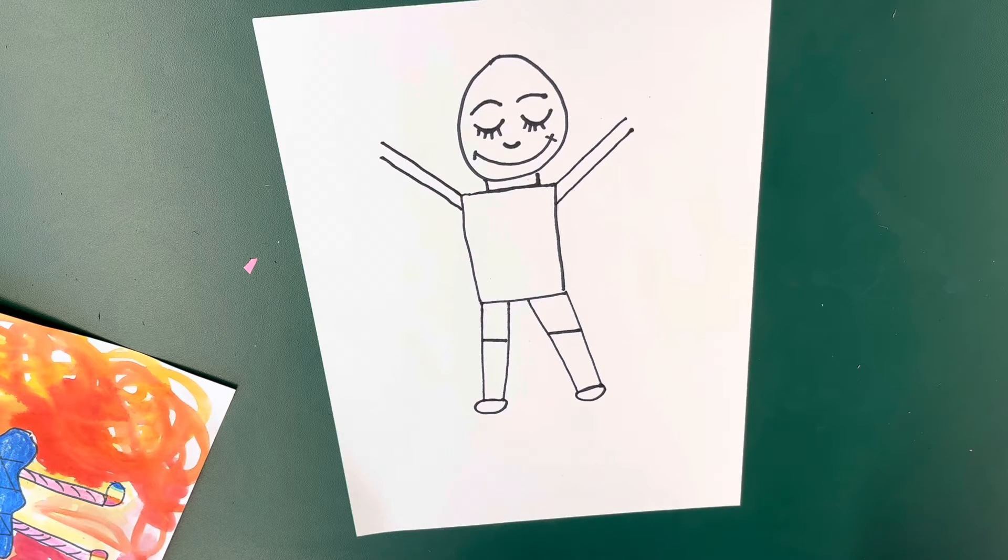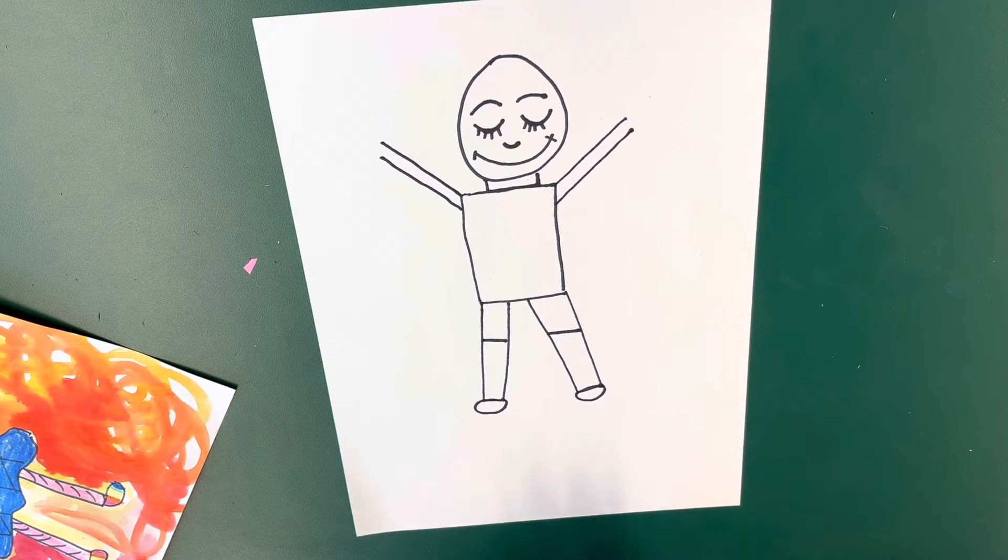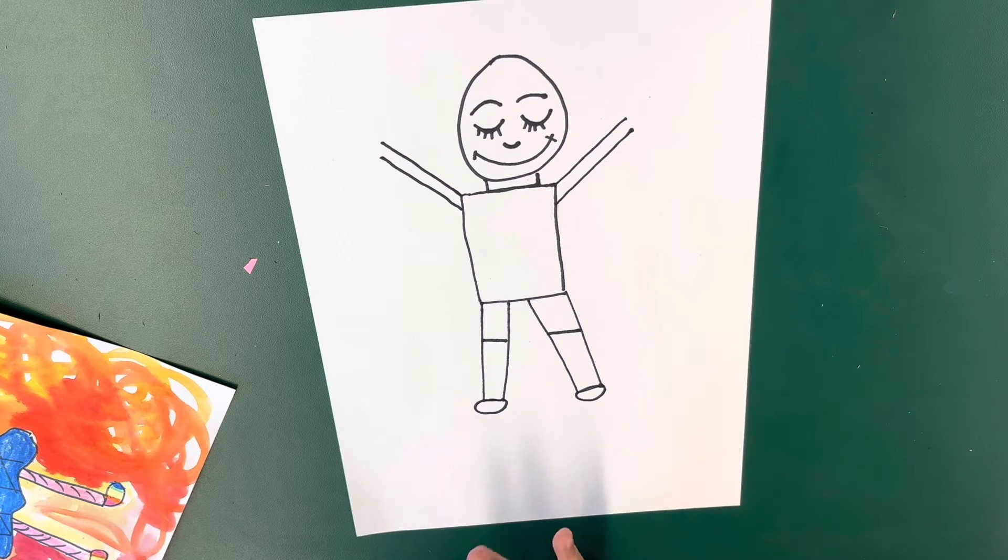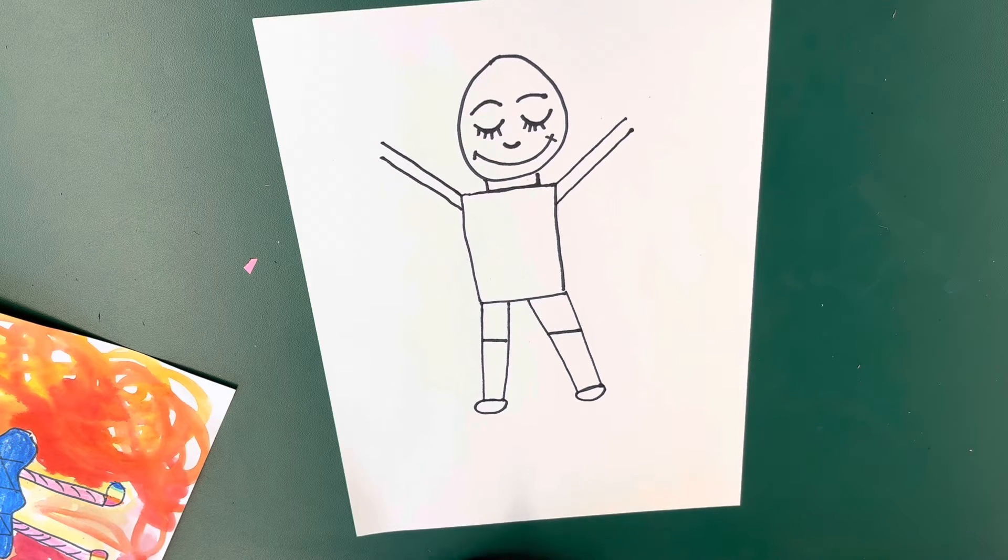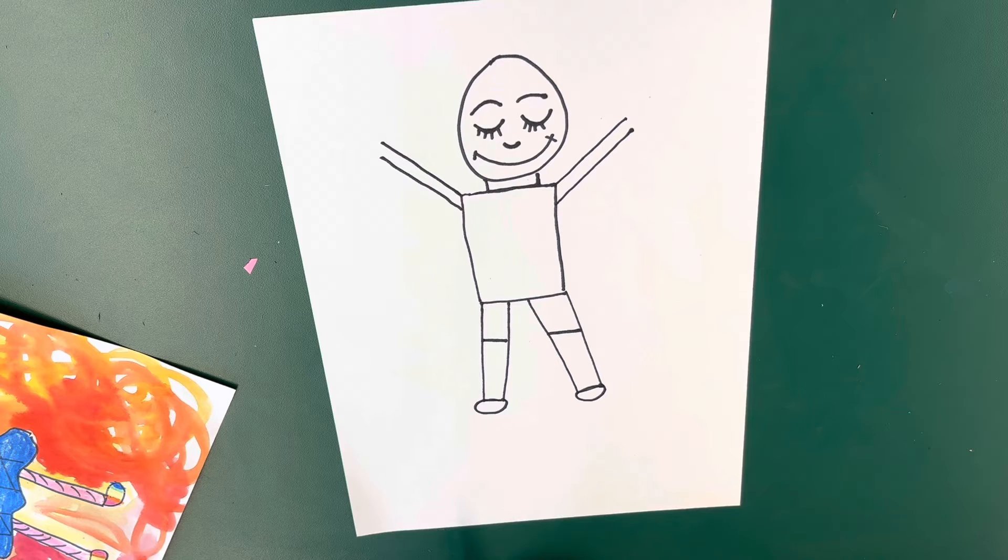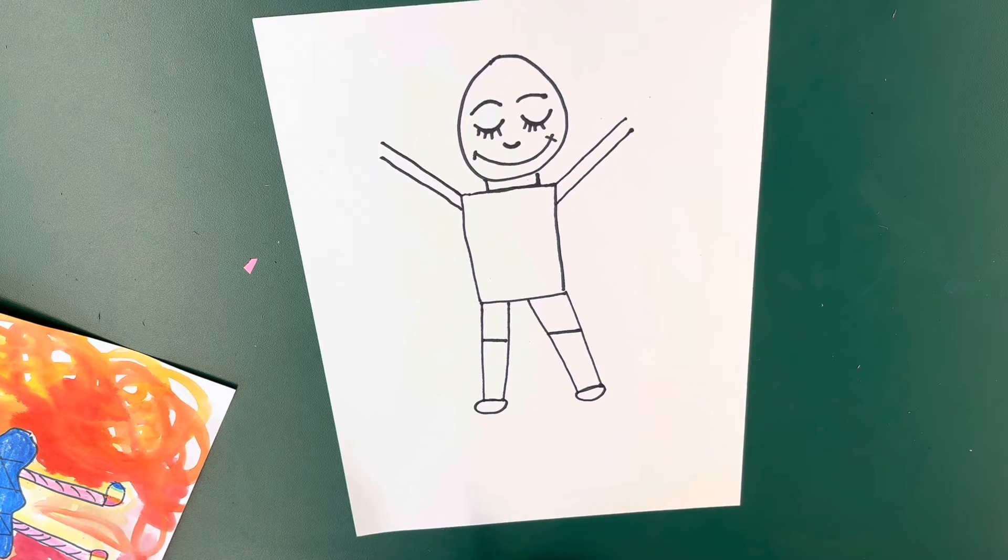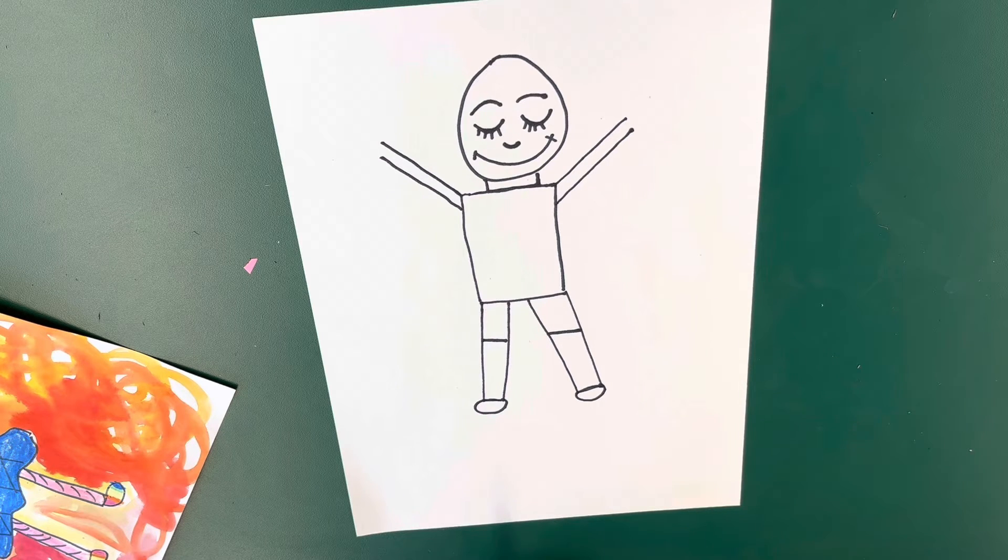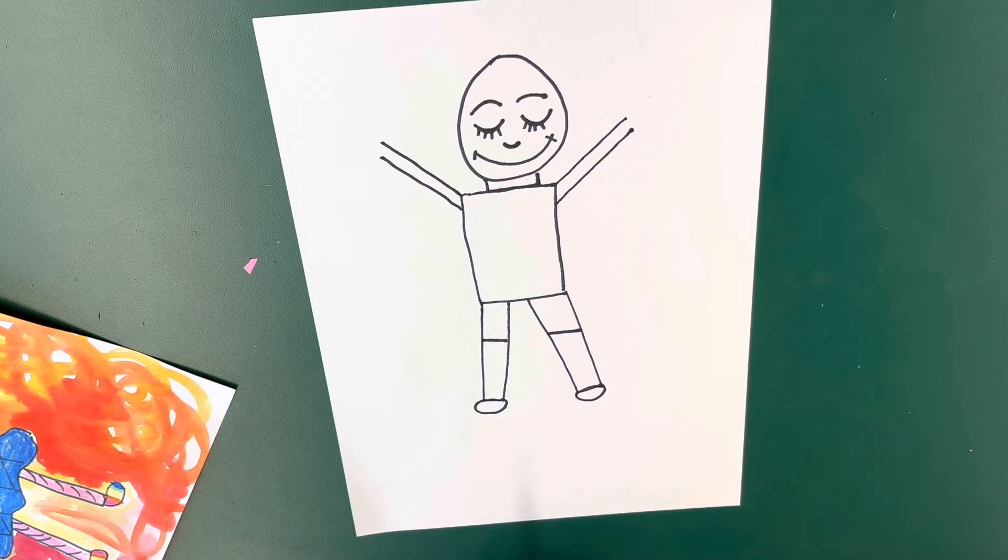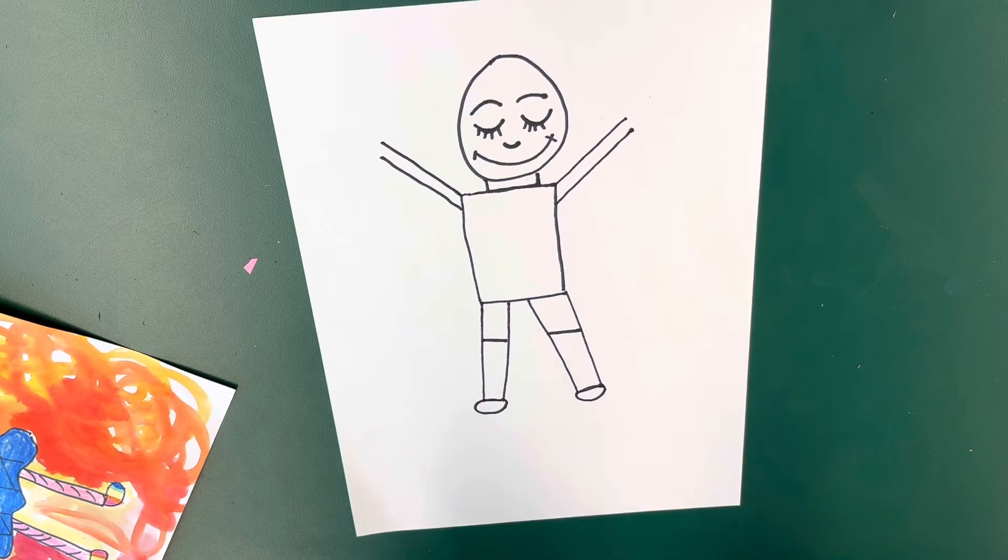Now hands can be very challenging, so when you go to do your hands if you have to simplify it and do less fingers you can. If you were to look at the illustrations in Peter Reynolds' book you would notice he doesn't always draw every finger—he simplifies it.